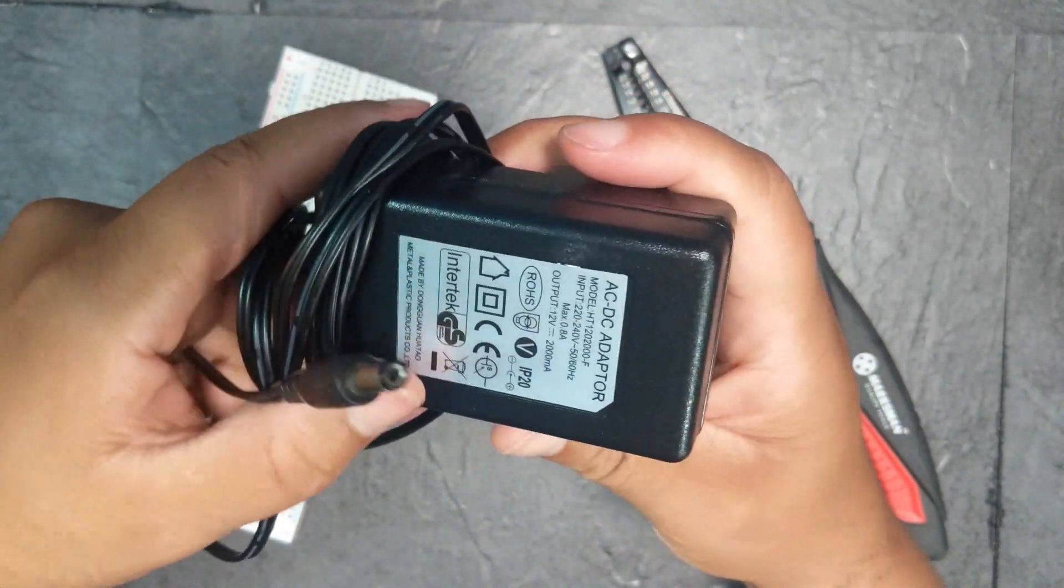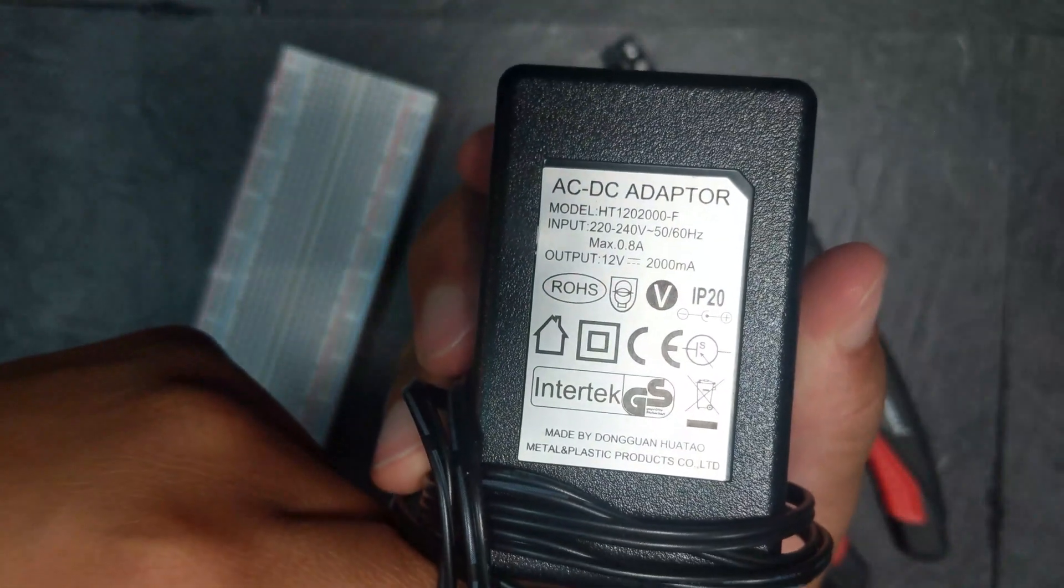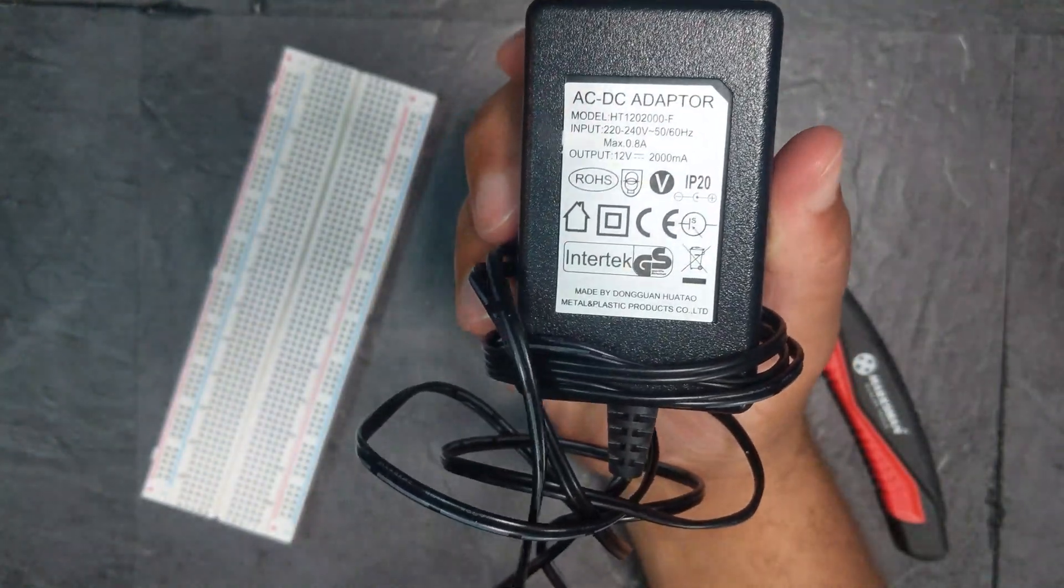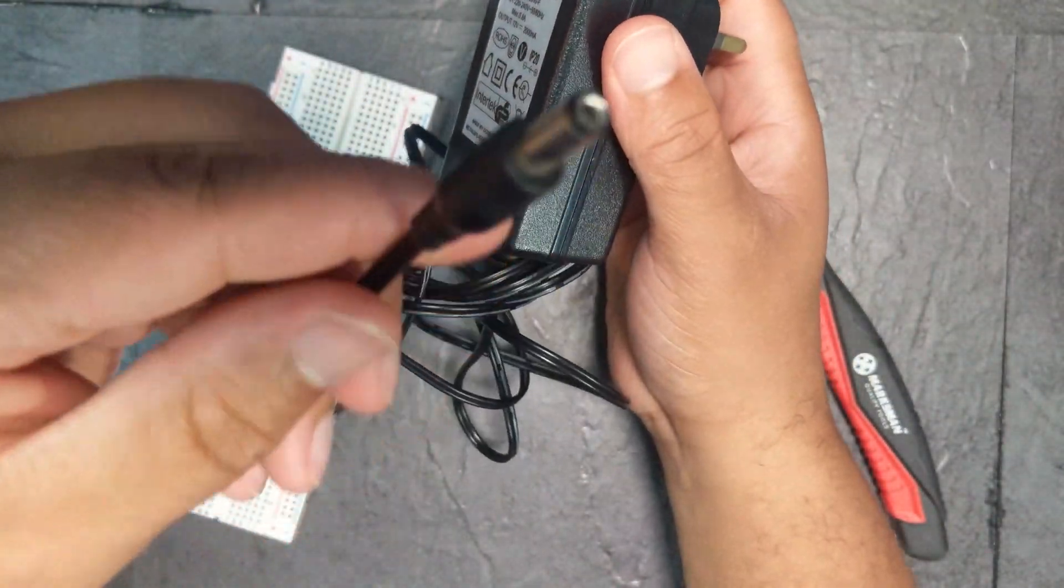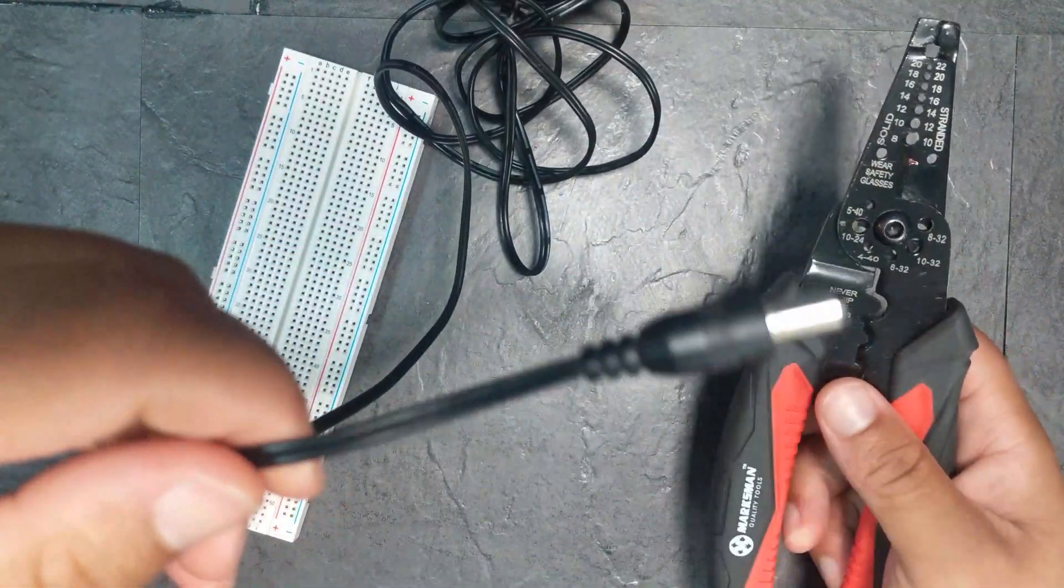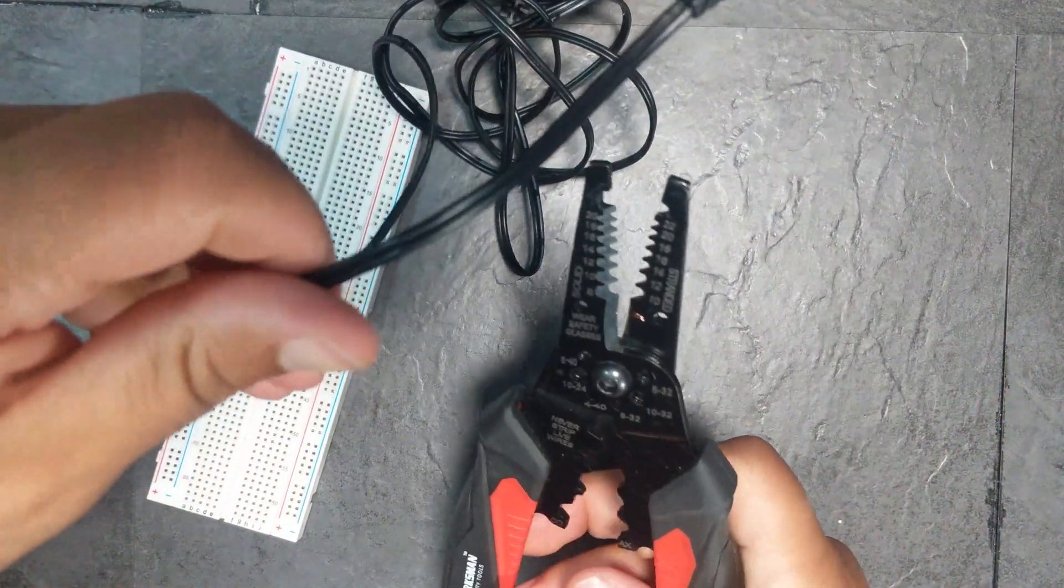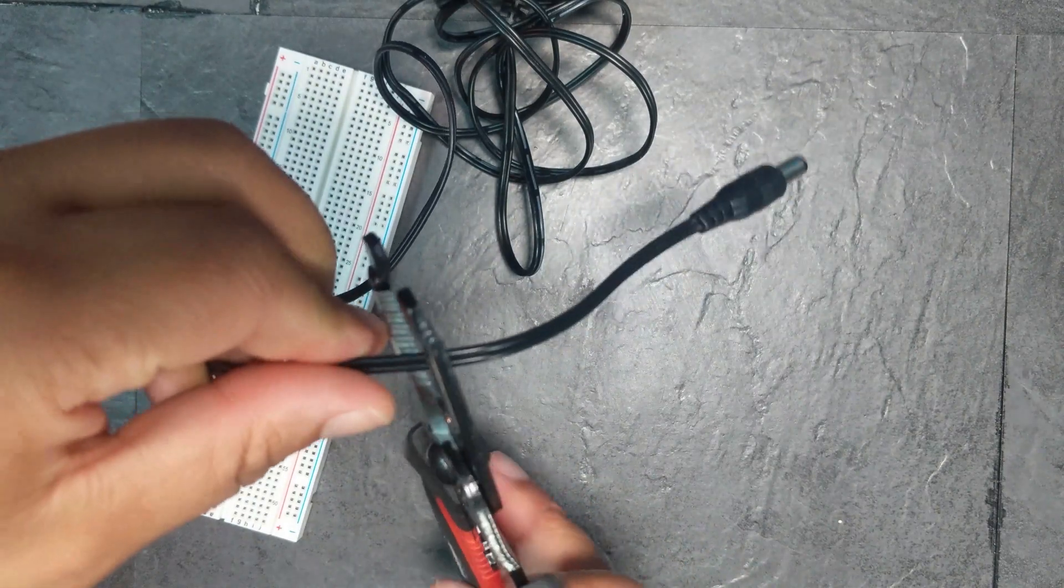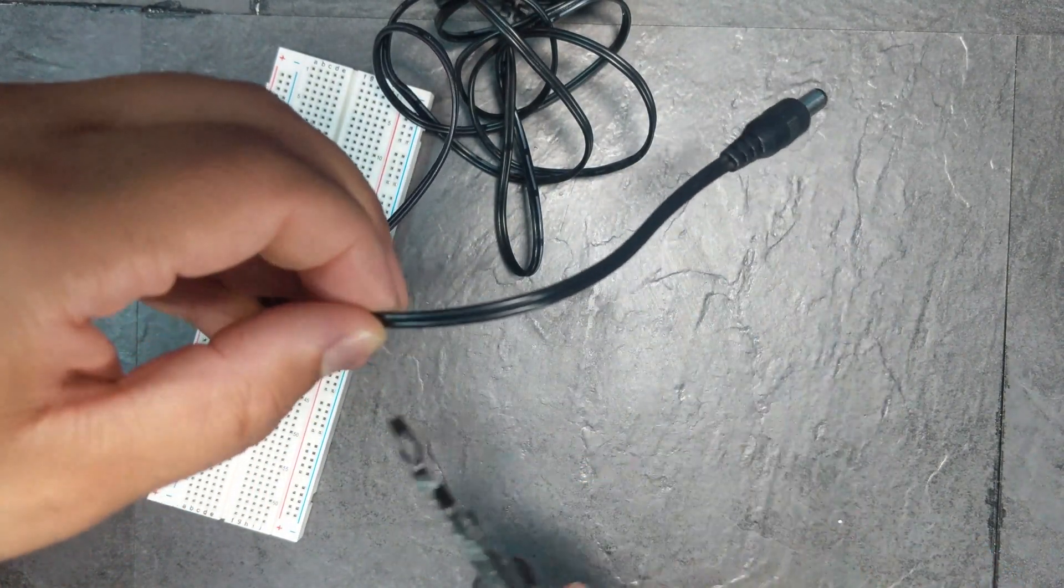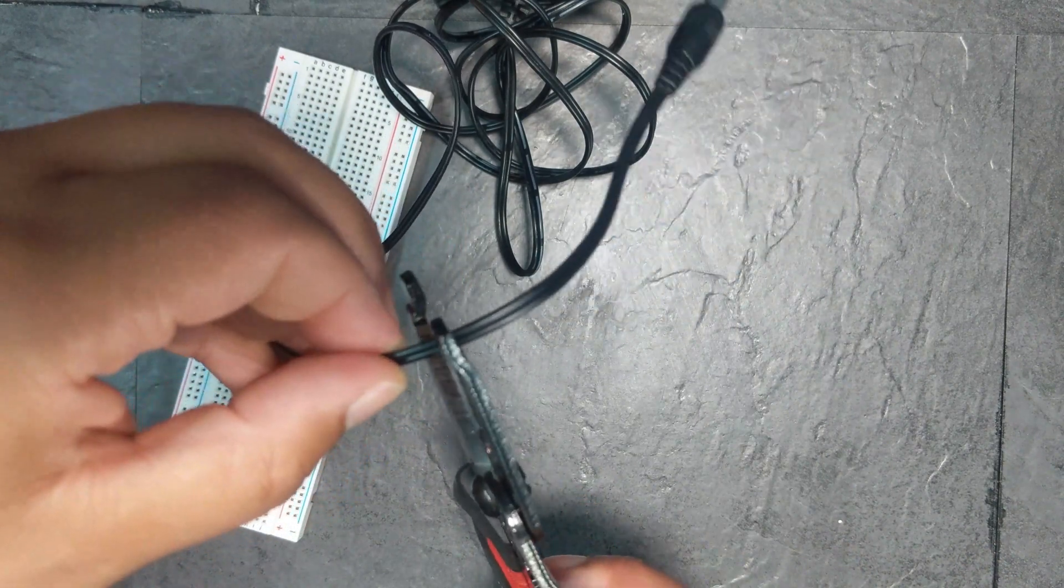It's fairly straightforward. Here I've got a 12 volt 2000 milliamp AC DC adapter. I just take this end here, and I would advise cutting it a bit further away from the end so that you've got a bit of room to resolder it back on if you want at a later time.